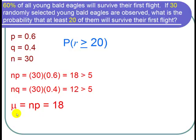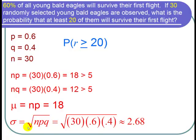So let's find the mean. The mean is just np, which is 18, so μ is 18. The standard deviation is the square root of npq, which is the square root of 30 times 0.6 times 0.4, which is about 2.68.